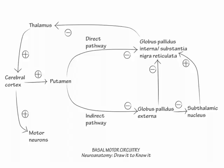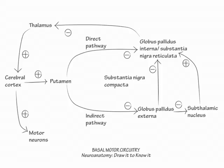Lastly, we need to account for the substantia nigra compacta, because Parkinson's disease results from a loss of dopaminergic cells within the substantia nigra compacta. The substantia nigra compacta serves to energize movement. It excites the direct pathway and inhibits the indirect pathway through the different dopaminergic receptors in the putamen.